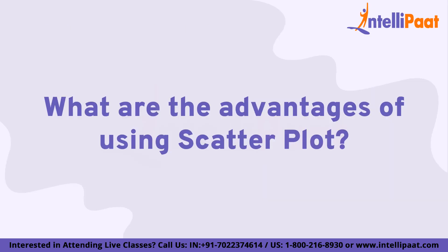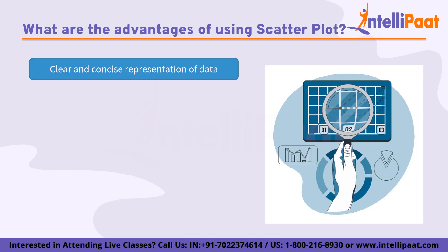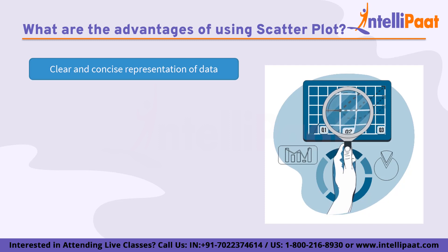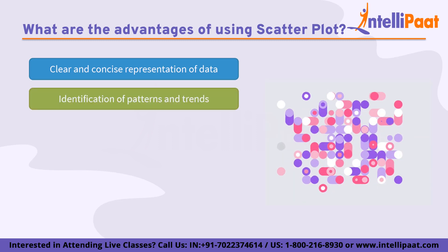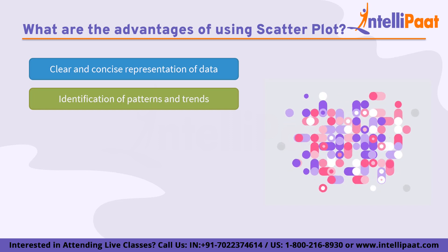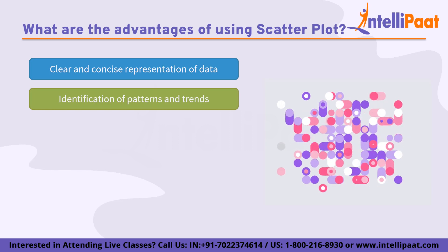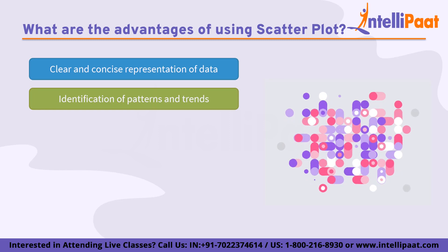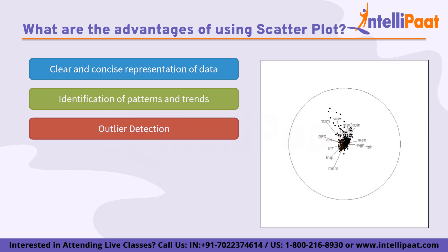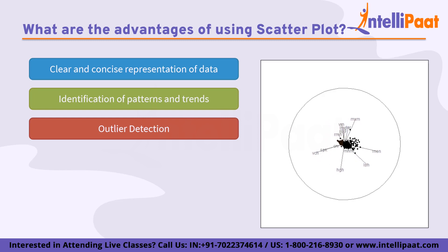Now we'll look at the advantages of using a scatter plot. First is clear and concise representation of data — scatter plots provide a clear and concise representation of the relationship between two variables, allowing us to visually see if there is any correlation or pattern. Second is identification of patterns and trends — by analyzing the scatter plot, we can identify if there is a positive or negative correlation between the two variables or if there is no correlation at all. Third is outlier detection — scatter plots can help in detecting outliers or anomalies in the data. These are data points that lie far away from the other data points on the plot and can be easily identified as they stand out from the rest.